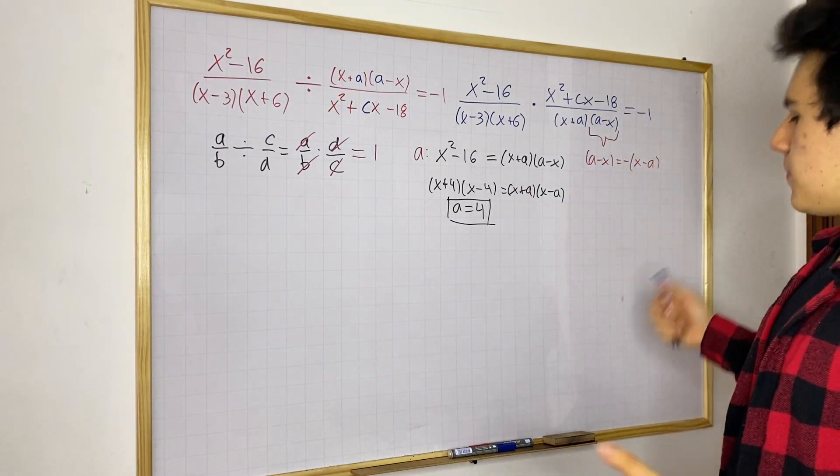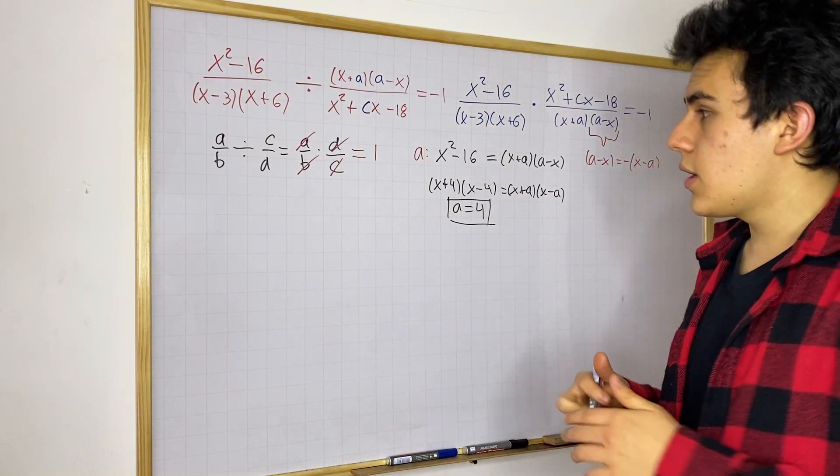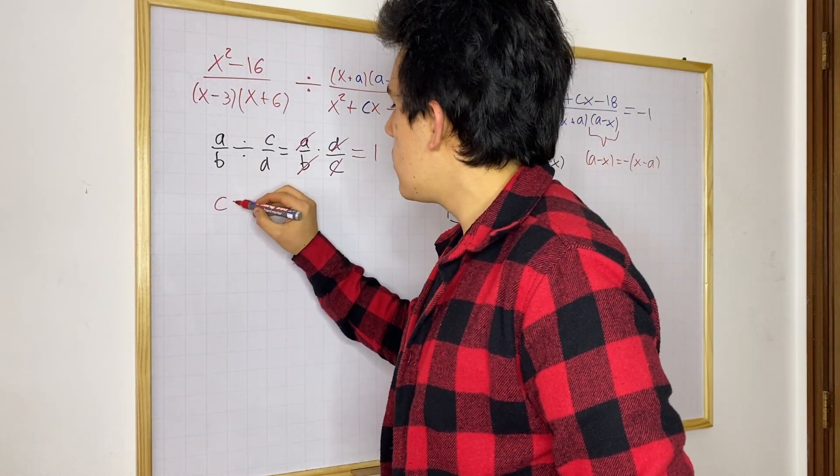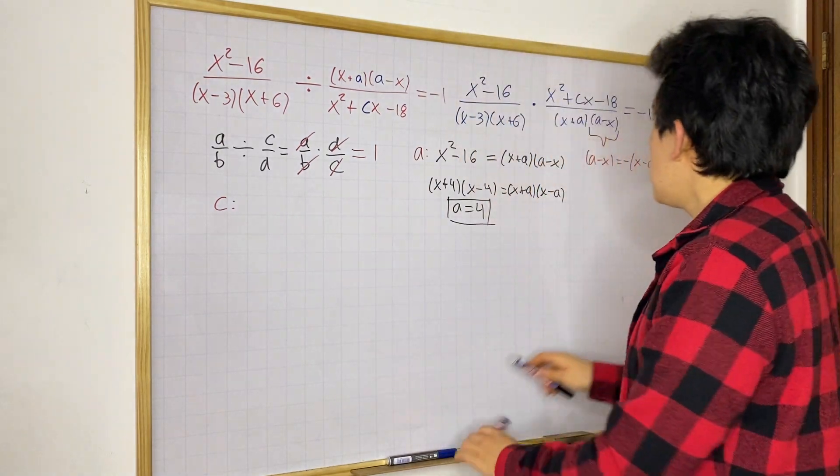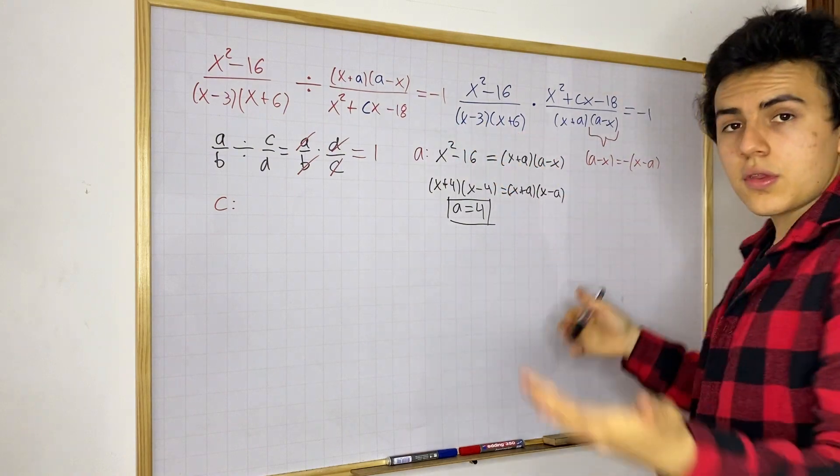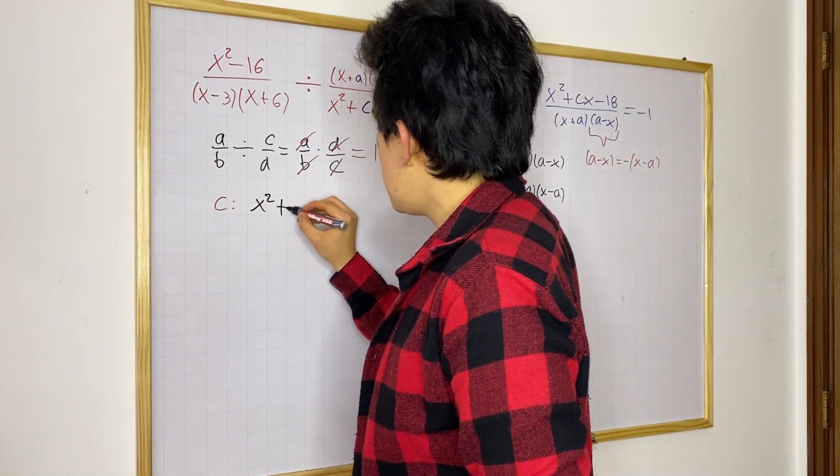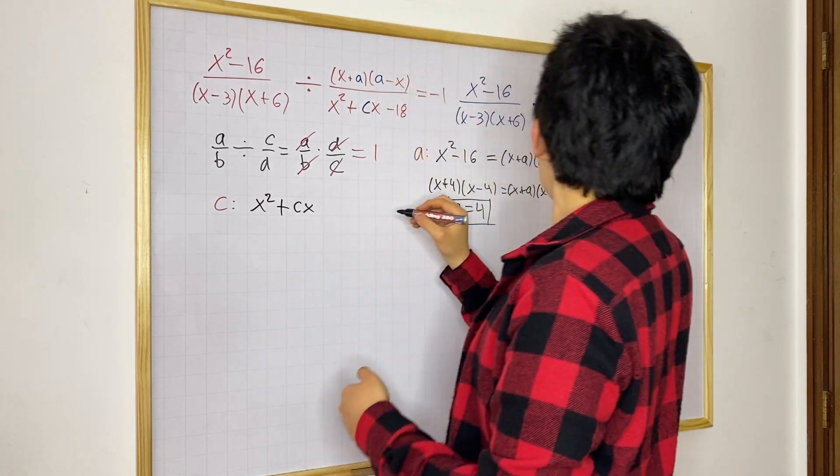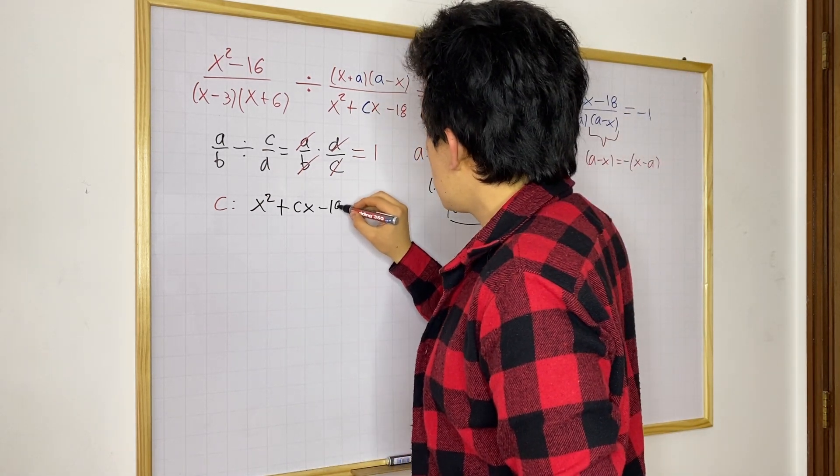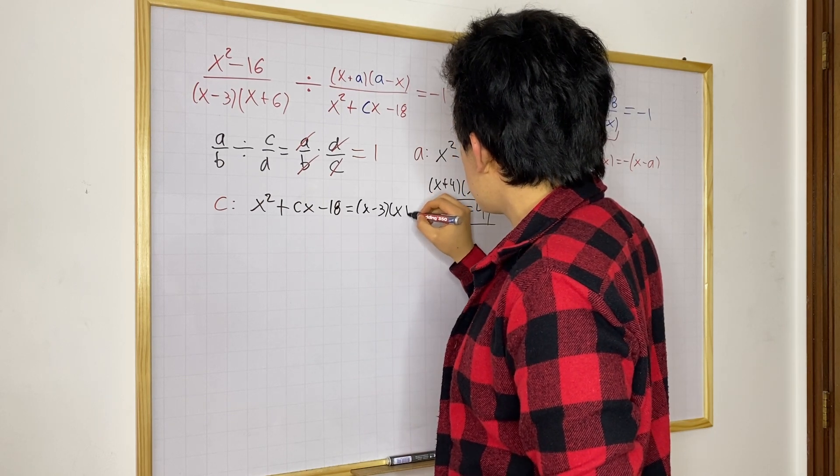Now, we need to find C. So, what can we do with C? Well, we're going to do the same logic that we did before. We know this numerator must be equal to this denominator so they can cancel out. So, we have that X squared plus CX minus 18 must be equal to X minus 3 times X plus C.